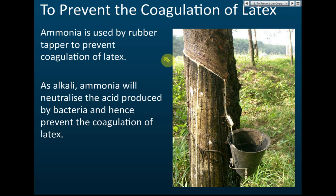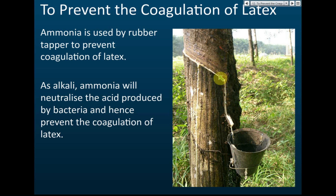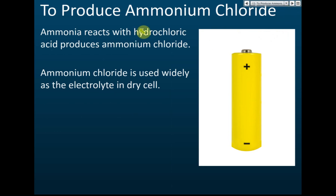Ammonia is also used to prevent the coagulation of latex. Latex is liquid rubber — the rubber milk — and it will coagulate in the presence of acid. Ammonia is used to neutralize the acid and thus prevent coagulation, keeping the latex in liquid form. Additionally, ammonia is used to produce ammonium chloride, which is the electrolyte used in dry cells, making it a very useful chemical in industry.